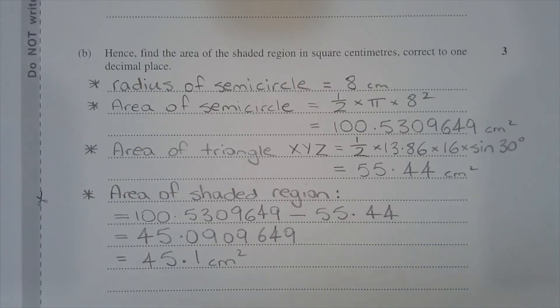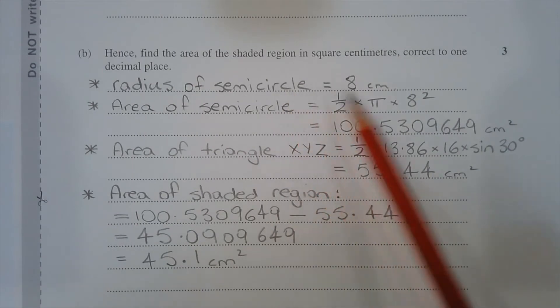To work out the area of the semicircle, we need the radius of the semicircle first. The diameter is 16 centimetres and the radius is half the diameter. So the radius of the semicircle is 8 centimetres.